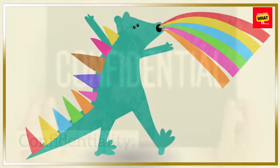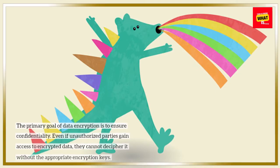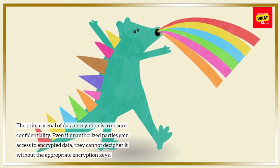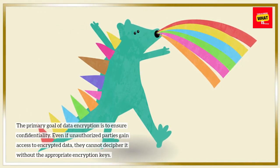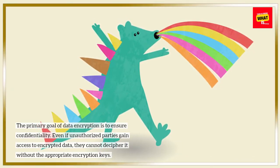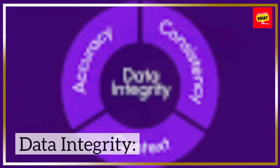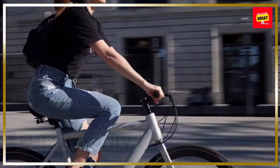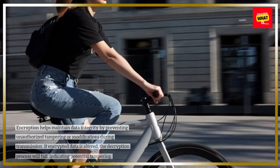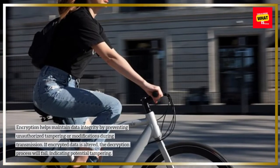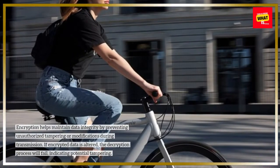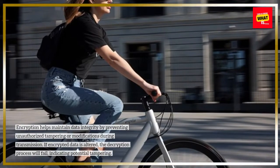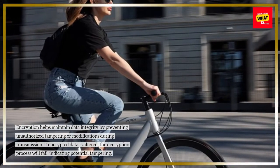Confidentiality: The primary goal of data encryption is to ensure confidentiality. Even if unauthorized parties gain access to encrypted data, they cannot decipher it without the appropriate encryption keys. Encryption also helps maintain data integrity by preventing unauthorized tampering or modifications during transmission. If encrypted data is altered, the decryption process will fail, indicating potential tampering.